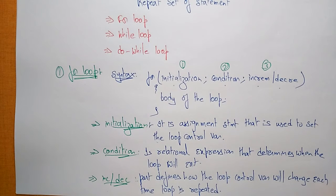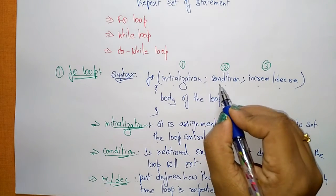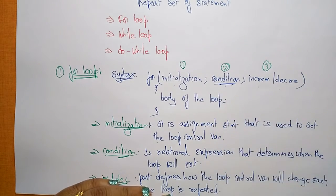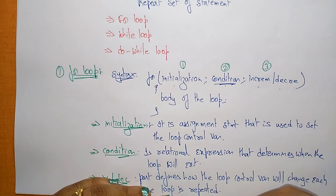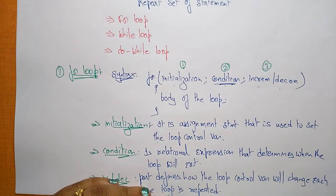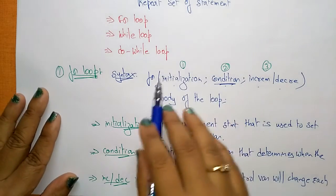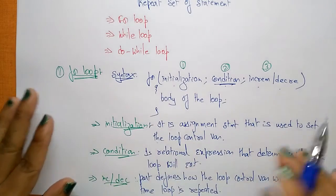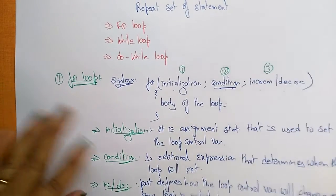The loop continues to execute as long as the condition is true. Whenever the condition becomes false, the program continues with the next statement after the for loop — that is, it continues with the rest of the statements in the program.